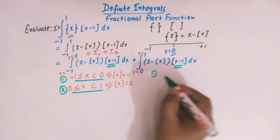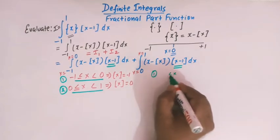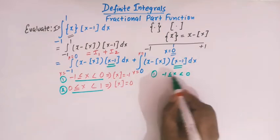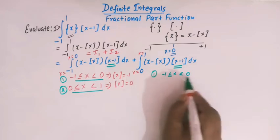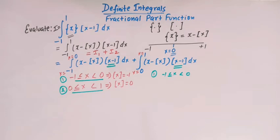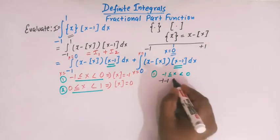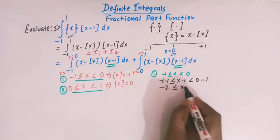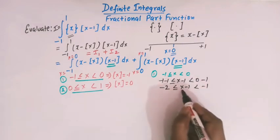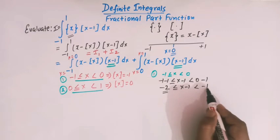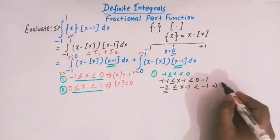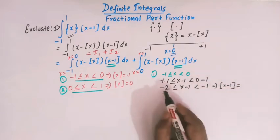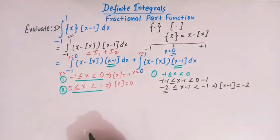For the first interval, x is greater than or equal to minus 1 and less than 0. If we subtract 1 throughout this inequality, we get minus 2 less than or equal to x minus 1 less than minus 1. So x minus 1 lies between minus 2 and minus 1. As per the definition of greatest integer function, the value of greatest integer of x minus 1 is minus 2.